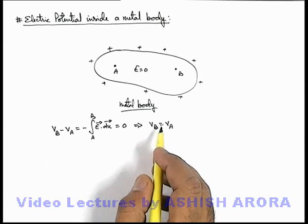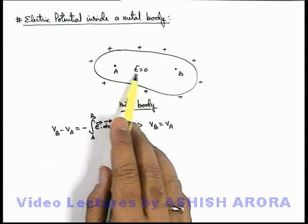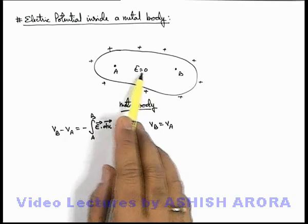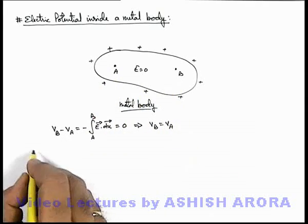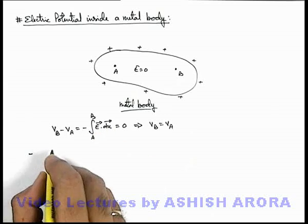So you can directly state: the region in which at every point electric field is zero, all points are equipotential. We can write down one important point.